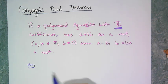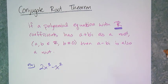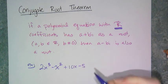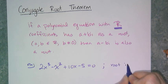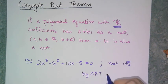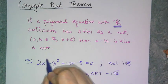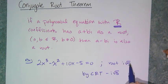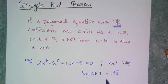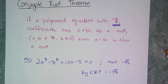Let's look at an example: 2x cubed minus x squared plus 10x minus 5 equals 0, and one root is i times the square root of 5. Then by the conjugate root theorem, negative i root 5 is the other root. By the fundamental theorem of algebra, I know there are 3 roots total. So I can use synthetic division or multiply out x minus i root 5 and x plus i root 5, then divide to find the last root. If the coefficients are real and one root is imaginary, the conjugate is automatically the other root.